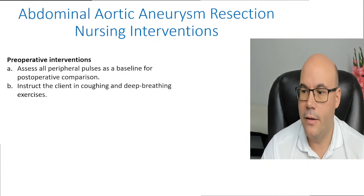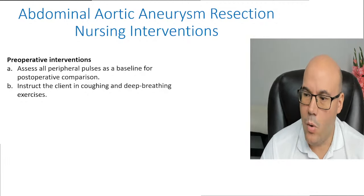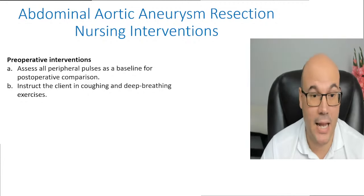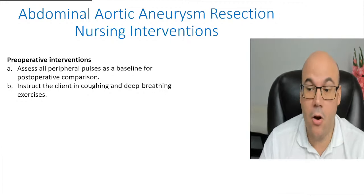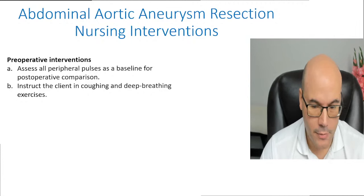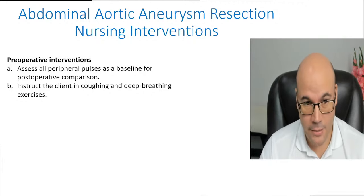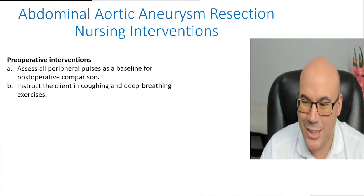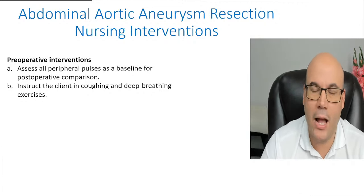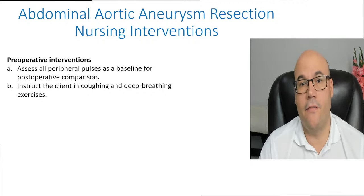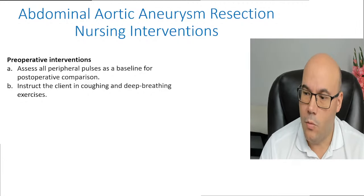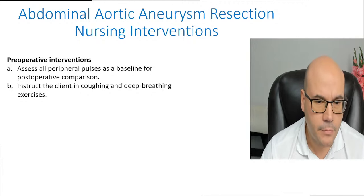For preoperative intervention, we want to assess all peripheral pulses as a baseline that we will use later, postoperatively, for comparison. We are not only assessing peripheral pulses to identify circulation, but also to develop a baseline we can compare after surgery — to identify if the surgery was effective and if the problem was corrected. By assessing pulses, we can tell.